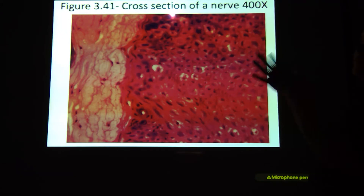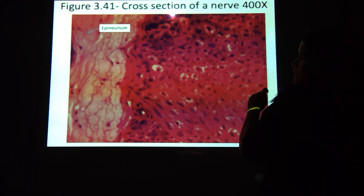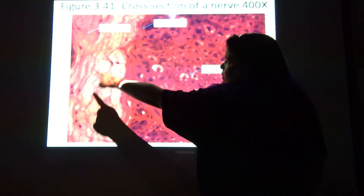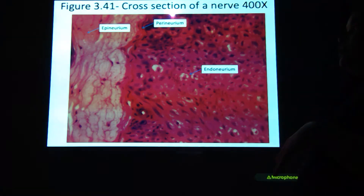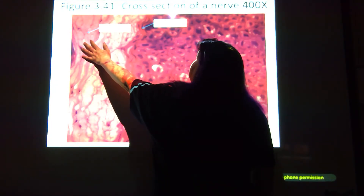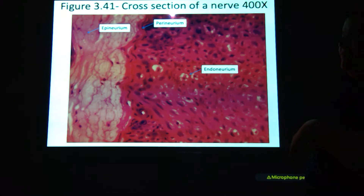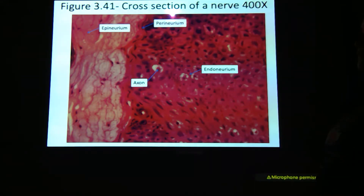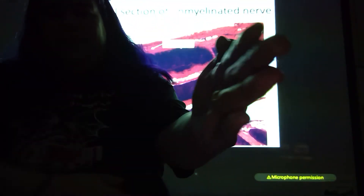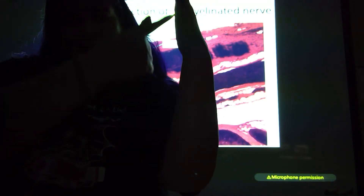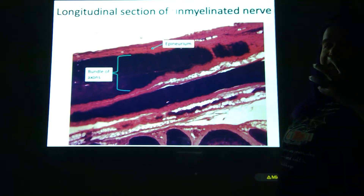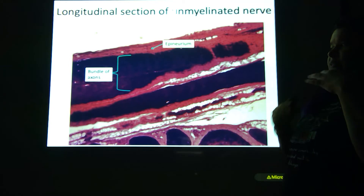Up close, each one of these is an axon. The endoneurium surrounds them, the perineurium surrounds that bundle, and then the epineurium — see that salmon color — that is the epineurium. The black dots dead center in the middle are the axons. Now I've cut the nerve lengthwise — it's a longitudinal section. You can see the epineurium very clearly here, and then this would be that bundle of axons, that fascicle, surrounded by the perineurium.